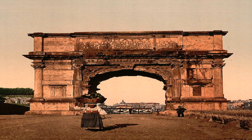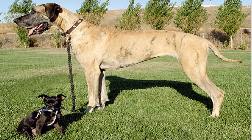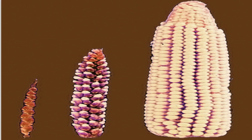Let's look at a couple of examples. Look at these two dogs — the Chihuahua and the Great Dane show a wide range of dog breed sizes. Look at this corn: Teosinte looks very different than modern corn, and this modern corn was produced by selective breeding.